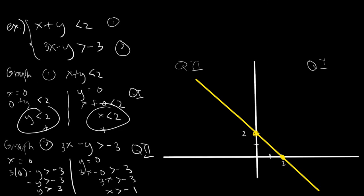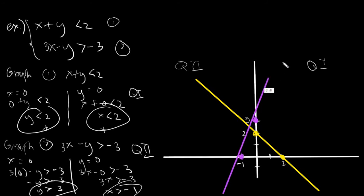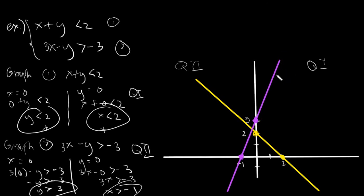Then let's plot our second equation using the values 3 and negative 1. Negative 1 for x would be somewhere here, and y is positive 3. We'll plot this one using the violet marker. Now we need to determine: do we use dashed or solid lines? Since these are strict inequalities, we will use dashed lines. So I'll change this one into a dashed line by erasing some parts.